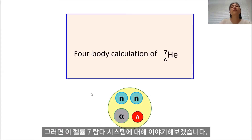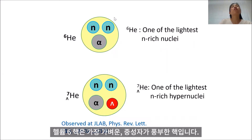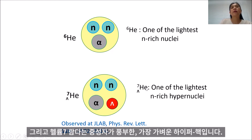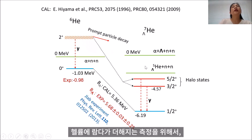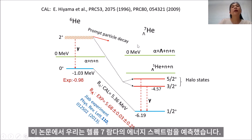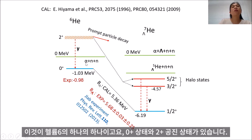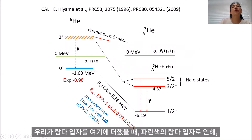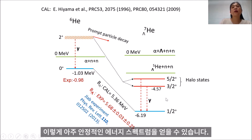Let us talk about the Helium-7-lambda system. The core nucleus Helium-6 is one of the lightest neutron-rich nuclei, so Helium-7-lambda is one of the lightest neutron-rich hypernuclei. Before the measurement of Helium-7-lambda, in this paper we predict the energy spectra of Helium-7-lambda. The core nucleus Helium-6 has a 0+ ground state and a 2+ resonance state. Once we add the lambda particle to each state, due to the glue-like role of the lambda particle, we obtain very stable energy spectra.